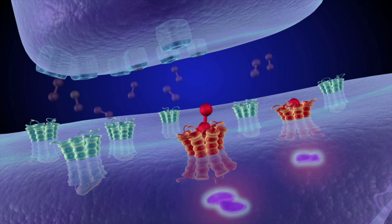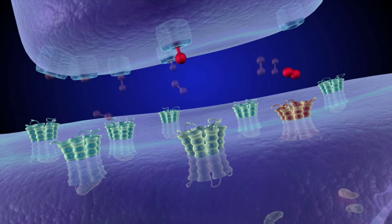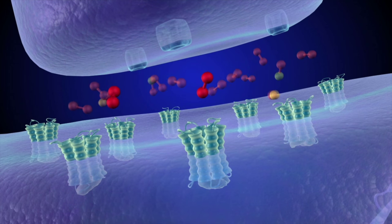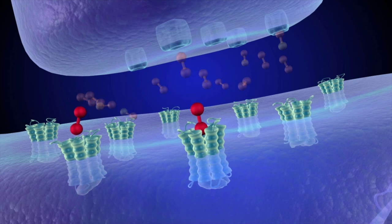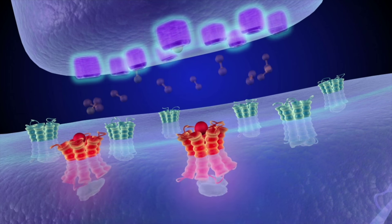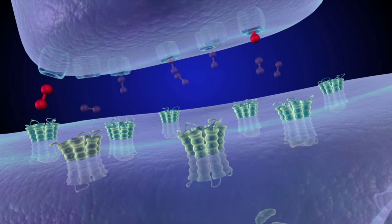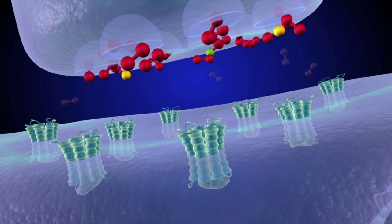When dopamine binds to the exterior of the dopamine receptor, this causes proteins attached to the interior part of the receptors to carry the signal onward within the cell. Some dopamine molecules re-enter the sending cell via dopamine transporters and can be re-released.